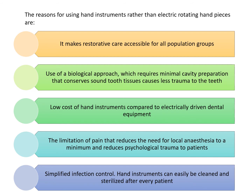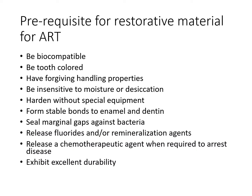The reasons for using hand instruments rather than electric rotary handpieces are multiple: hand instruments make restorative care accessible for all populations — urban or rural; this is a more biological approach with controlled cavity preparation; it is low cost; there is less pain and therefore less need for anesthesia; and infection control is simplified because there is no aerosol production and hand instruments can be easily cleaned and sterilized.